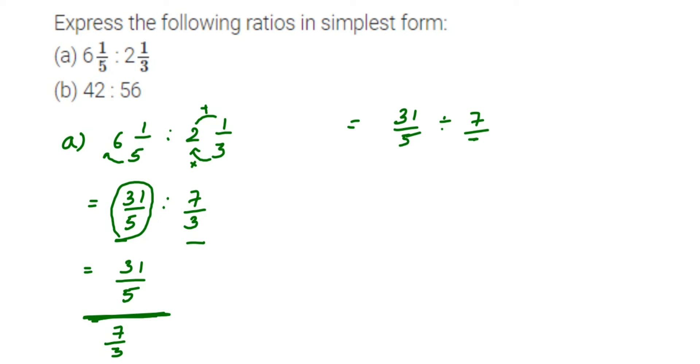To divide two fractions, the first number remains the same and we take the reciprocal of the second number. The division becomes multiplication. So (31/5) ÷ (7/3) becomes (31/5) × (3/7). We cannot cancel anything here, so we just multiply.